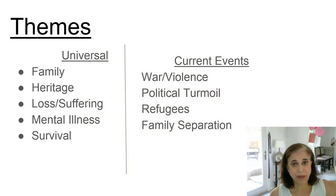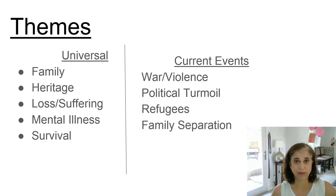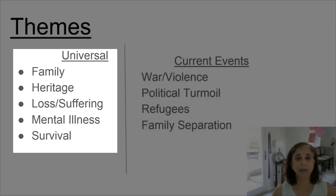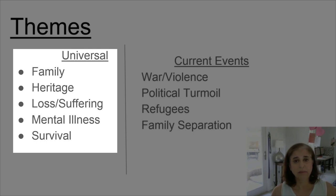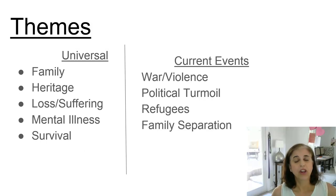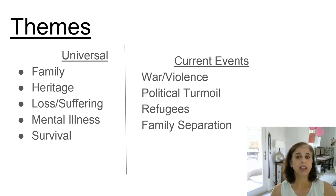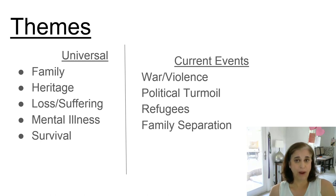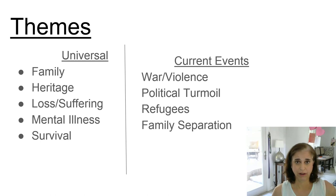One reason The Best We Can Do is such a popular book is because of its universal themes — ideas such as family and heritage, loss and suffering, mental illness and survival. Those are themes that cross beyond age, beyond location, beyond gender, religion, any backgrounds. So what is happening to Thi in her book happens to people around the world, making the themes universal.